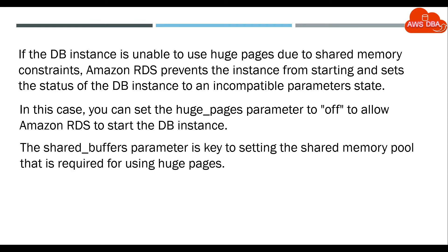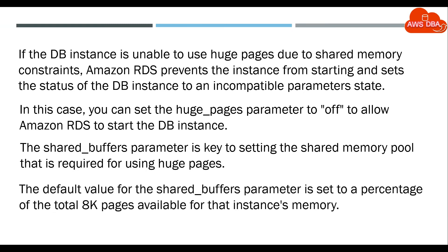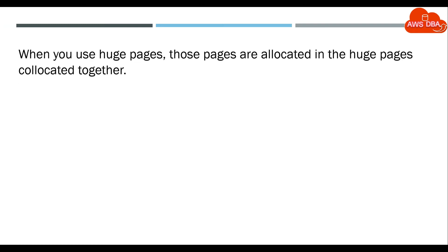The shared_buffers parameter is key to setting the shared memory pool that is required for using Huge Pages. The default value for the shared_buffers parameter is set to a percentage of the total 8K pages available for that instance's memory. When you use Huge Pages, those pages are allocated in the Huge Pages collocated together.